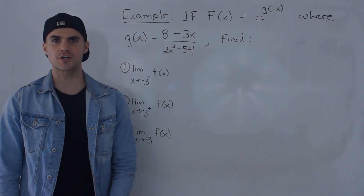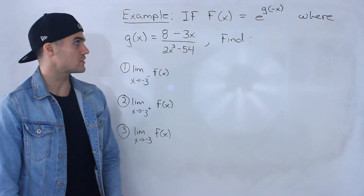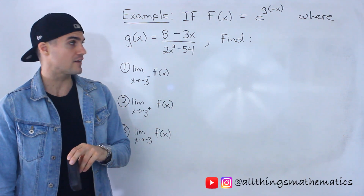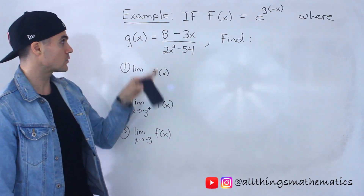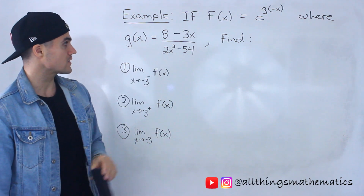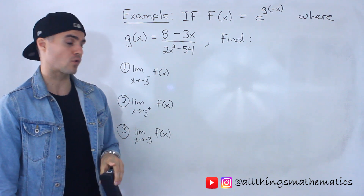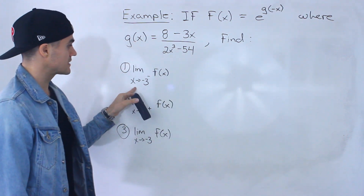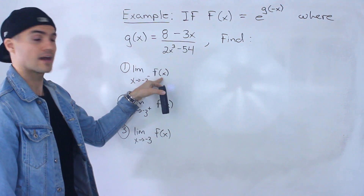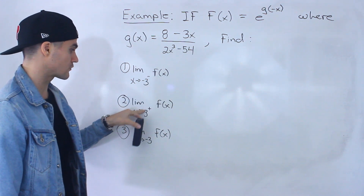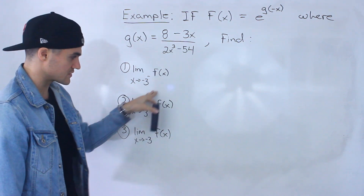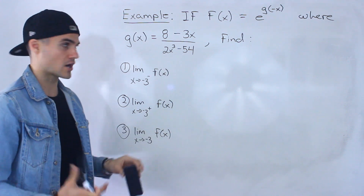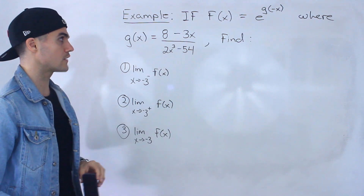Welcome back. Patrick here. Moving on to the next question. So if f of x equals e to the power of g of negative x, where g of x is equal to 8 minus 3x over 2x cubed minus 54, we need to find three limits: the limit as x approaches negative 3 from the negative side of f of x, from the positive side of f of x, and the general limit as x approaches negative 3 of f of x.